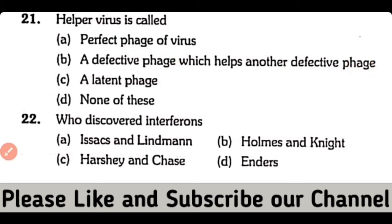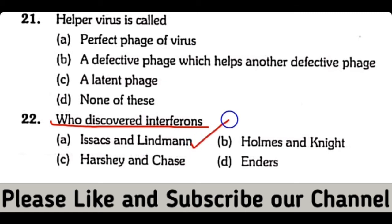Question number 22. Who discovered interferon? Isaacs and Lindeman, Holmes and Knight, Harshae and Jace, or Inders. So the correct answer is option A. Isaacs and Lindeman discovered interferon.